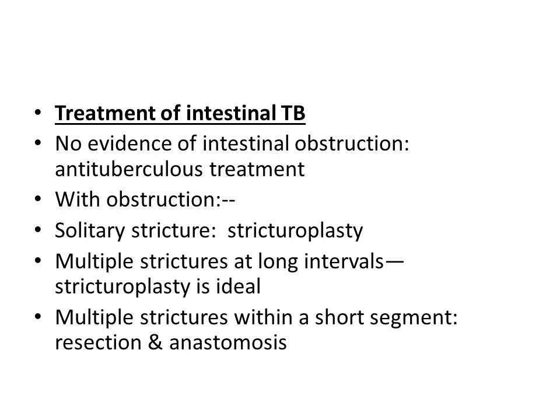Treatment of intestinal tuberculosis: if there is no evidence of intestinal obstruction, treatment is anti-tuberculous therapy. With obstruction, surgical procedures are required. If there is a solitary stricture, do stricturoplasty. If multiple strictures at long intervals are present, stricturoplasty is ideal to save the gut. But if there are multiple strictures in a short segment, or if the stricture is long, then we do resection and anastomosis.